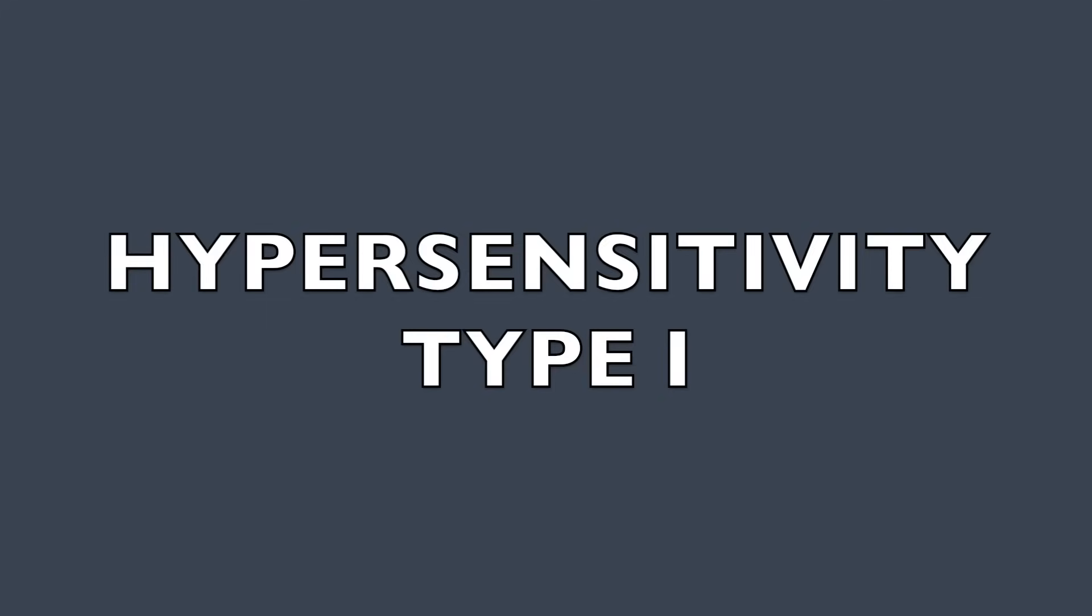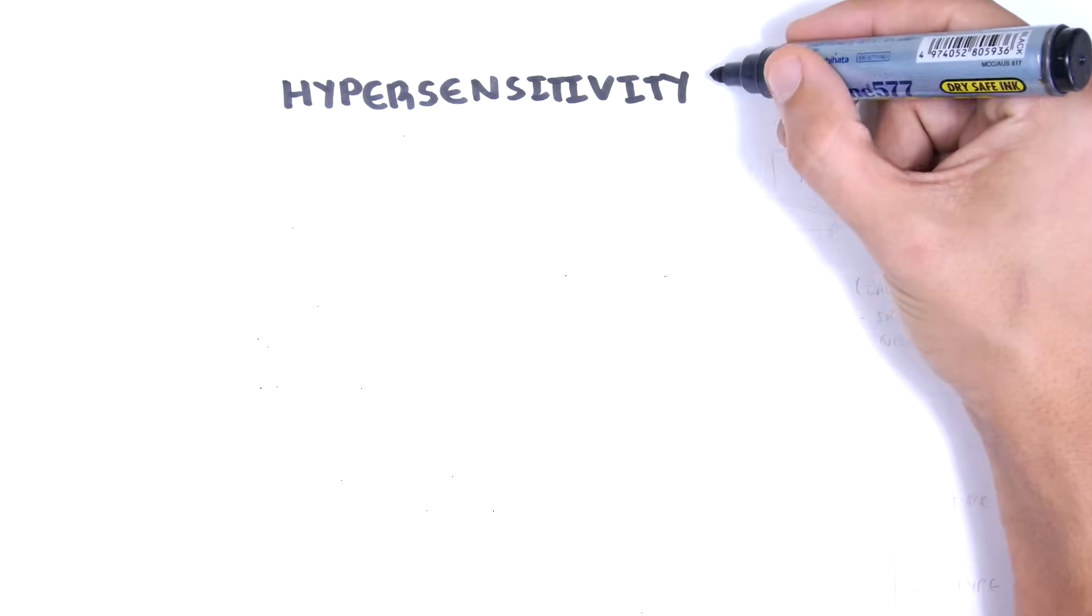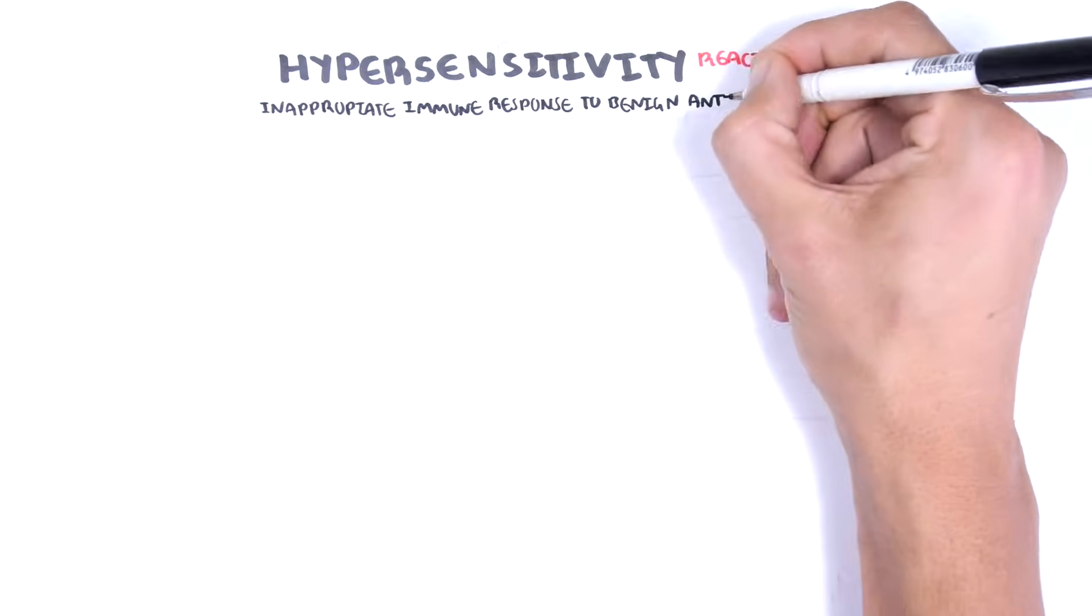In this video, we're going to talk about hypersensitivity type 1. Hypersensitivity reactions are exaggerated or inappropriate immune response to a benign antigen.